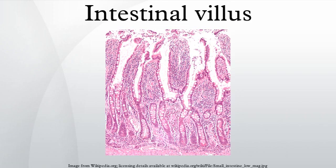Intestinal villi are small, finger-like projections that protrude from the epithelial lining of the intestinal wall. Each villus is approximately 0.5 to 1.6 mm in length, and has many microvilli projecting from the enterocytes of its epithelium, which collectively form the striated or brush border. Each of these microvilli are much smaller than a single villus. The intestinal villi are also much smaller than any of the circular folds in the intestine.